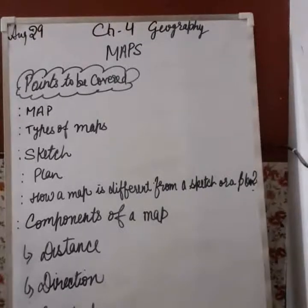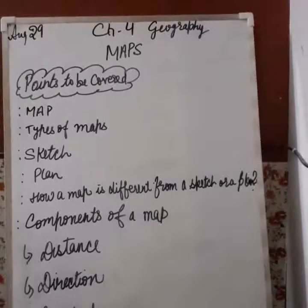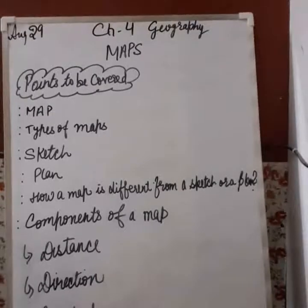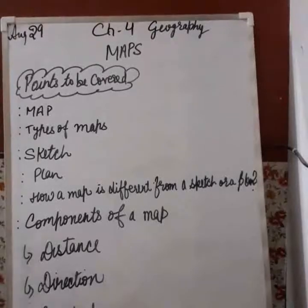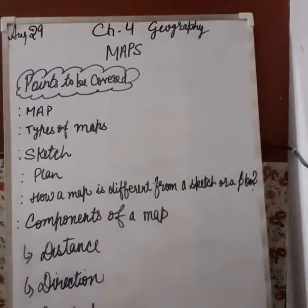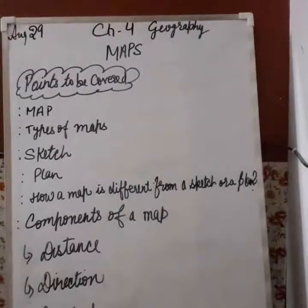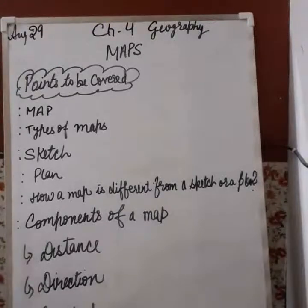Next we need to learn about thematic maps. Thematic maps are theme-based maps — they focus on specific information such as road maps, railway maps, maps showing different kinds of forests and different kinds of soils. There are maps which show the distribution of forests, industries, etc. Suitable titles are given on the basis of information provided in these maps.